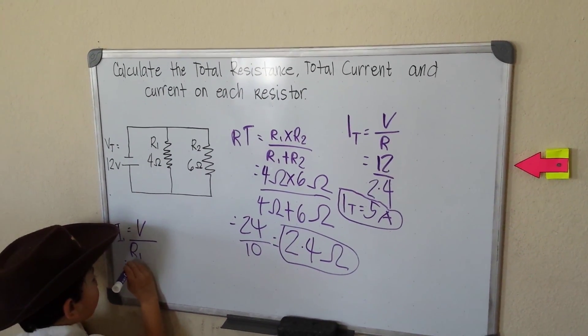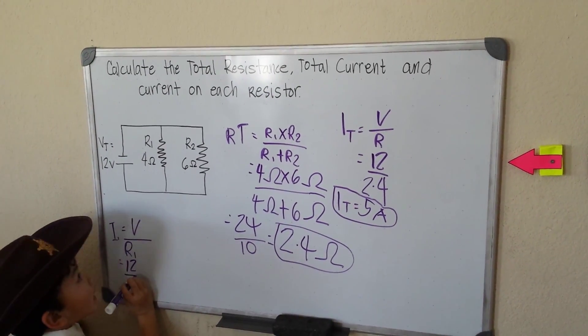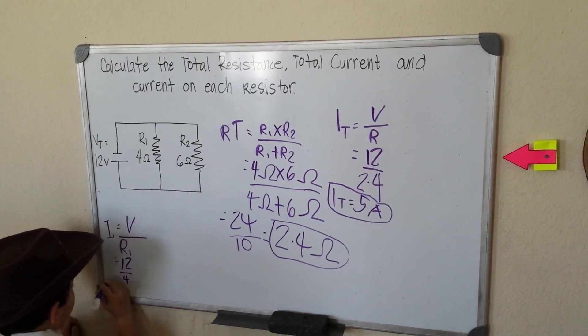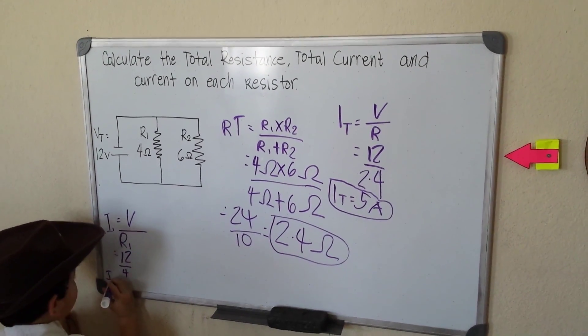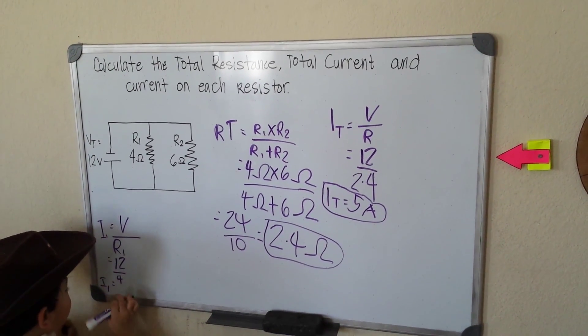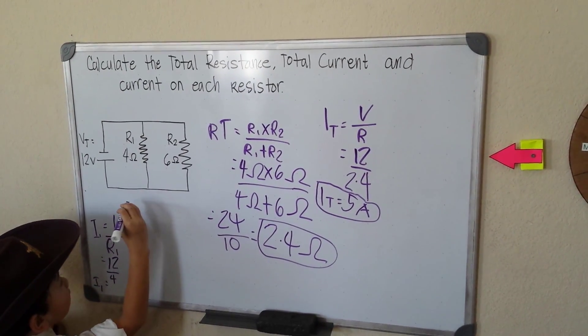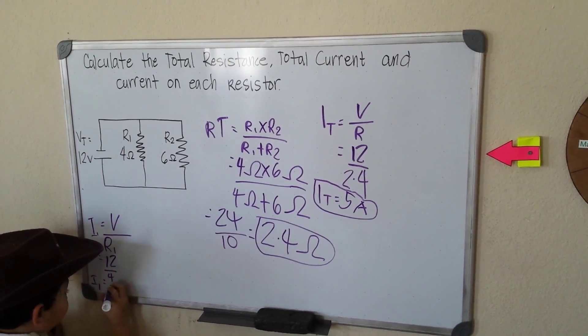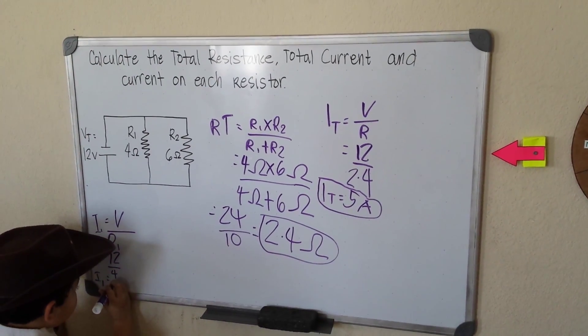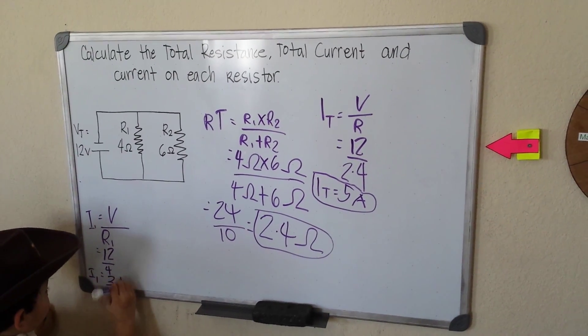So V is 12 divided by R1 is 4. So I1 is, what is that? 4, 8, 12. That will be 3 amperes.